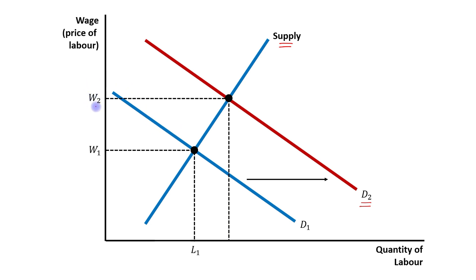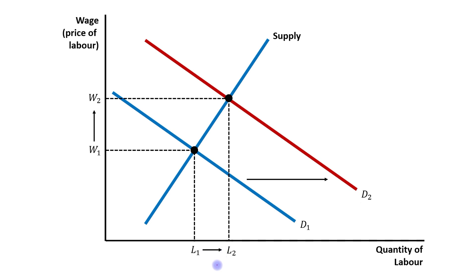W2 will be the new equilibrium wage and L2 is the new equilibrium employment. As we can see, the equilibrium wage has increased and equilibrium employment has also increased. Now if we want to see the economics behind this, we can look at how we achieve this new equilibrium.